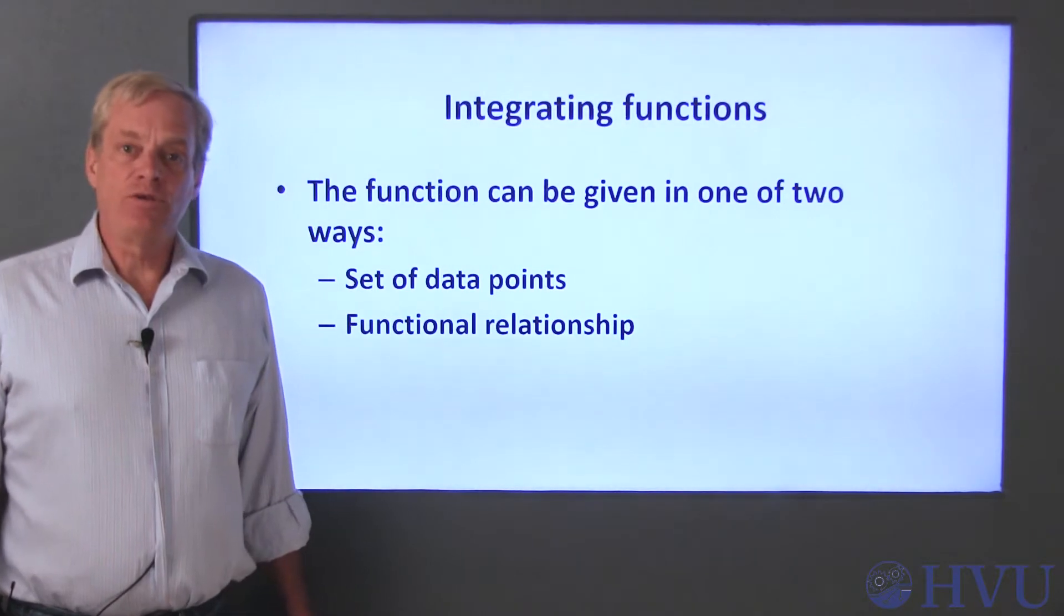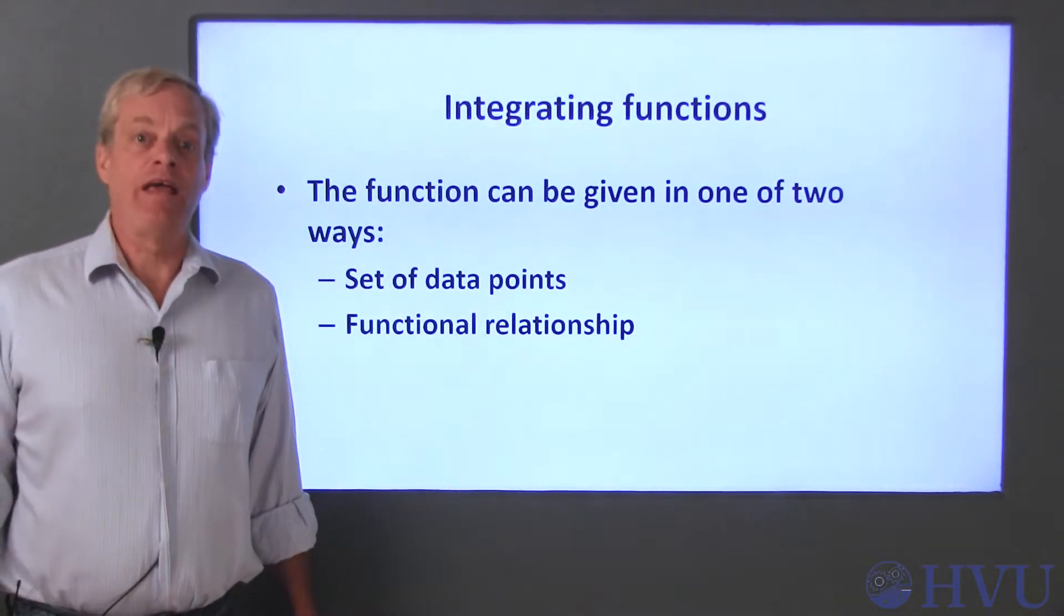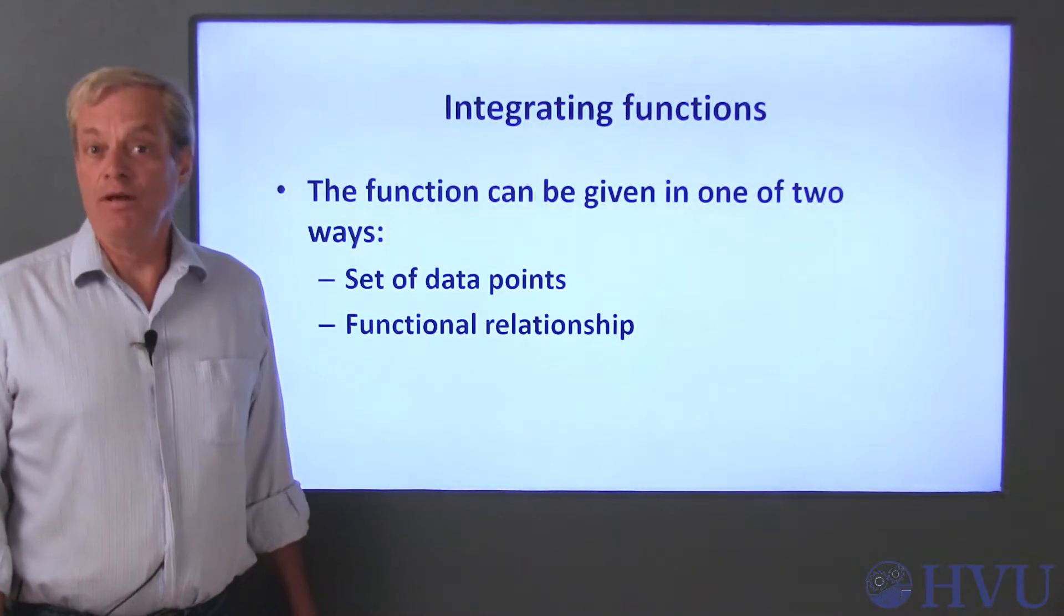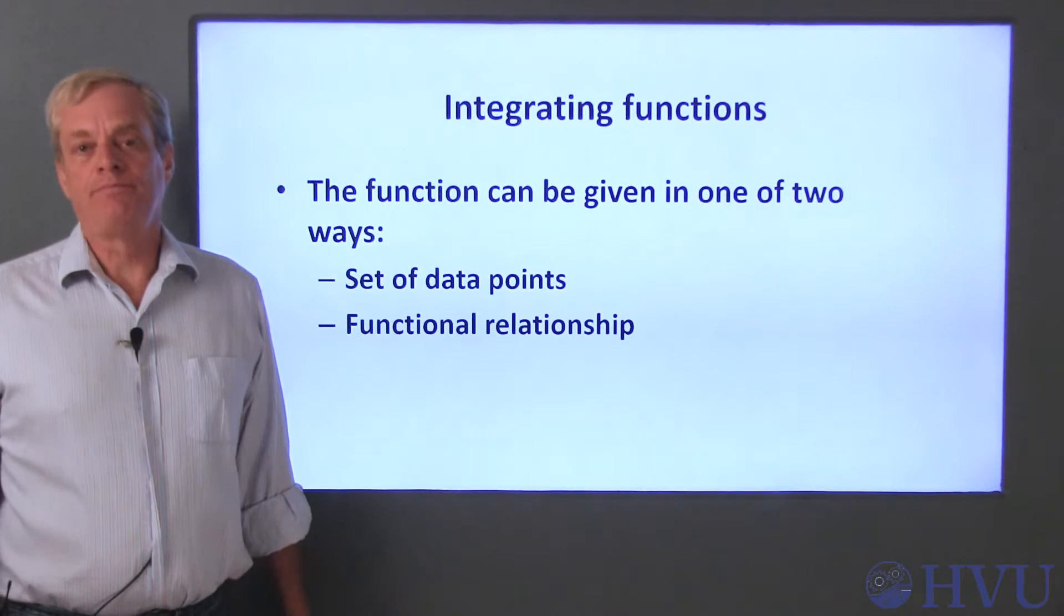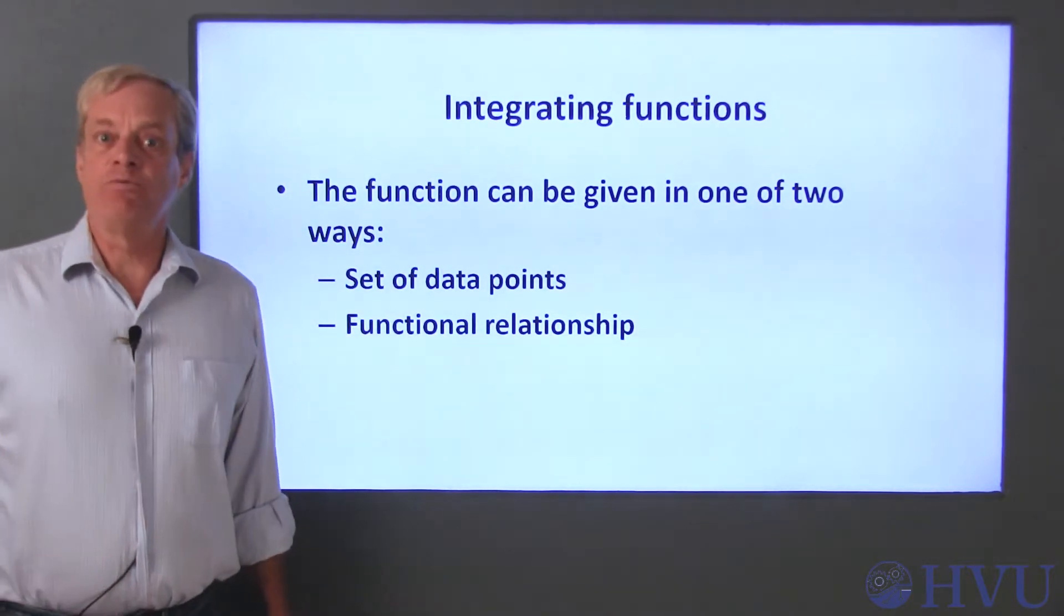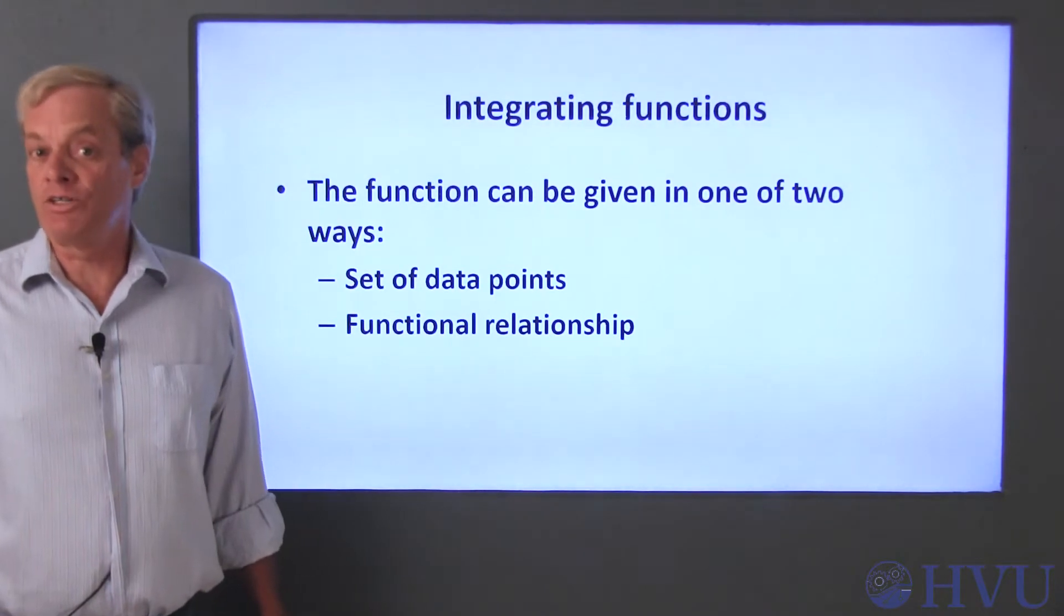The only difference between these two cases is that if we are given a functional relationship, we create the data points ourselves. This means we can control the spacing between the data points. The advantage of this is that we could reduce the spacing between the data points to improve the accuracy of our solution.